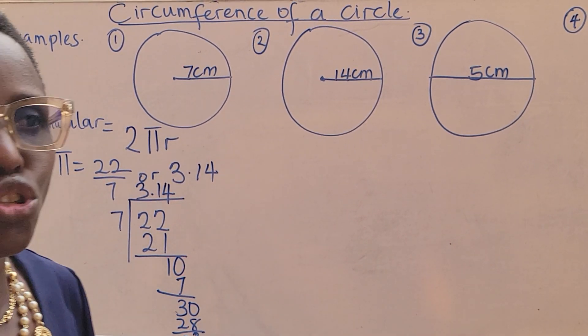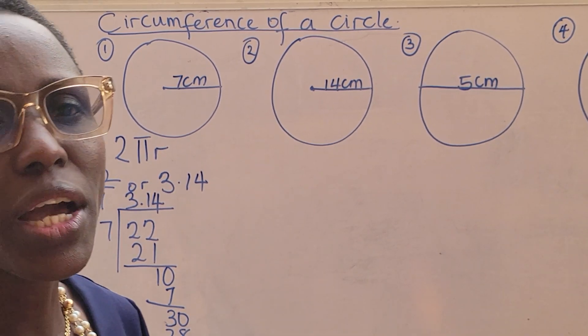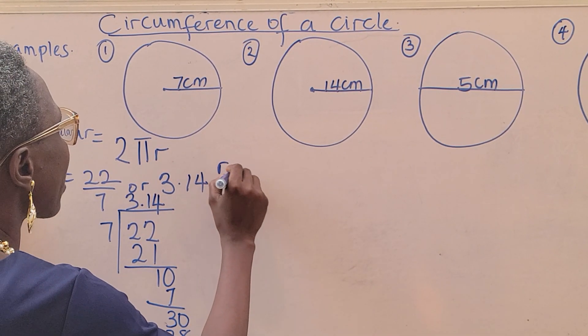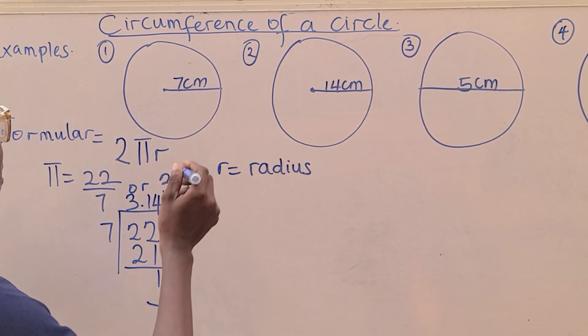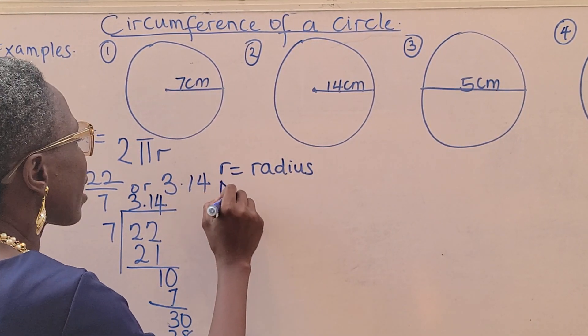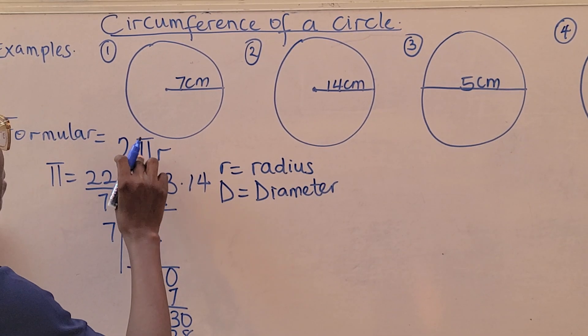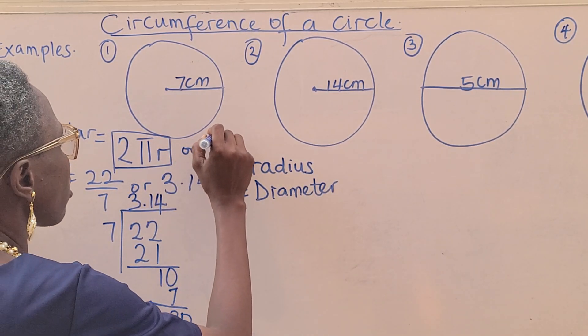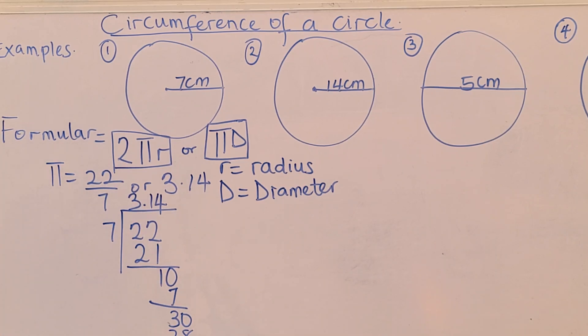Sometimes the question will ask you to use π as 3.14, and sometimes they will tell you that π is 22 over 7. You will always be given the value of π. You will also be given r, which is our radius. Radius is half of the diameter. From the beginning of the circle to the end is diameter. Half of the diameter is called radius. Sometimes you are given a radius, and sometimes you are given d, which is diameter. I have put examples on the board.